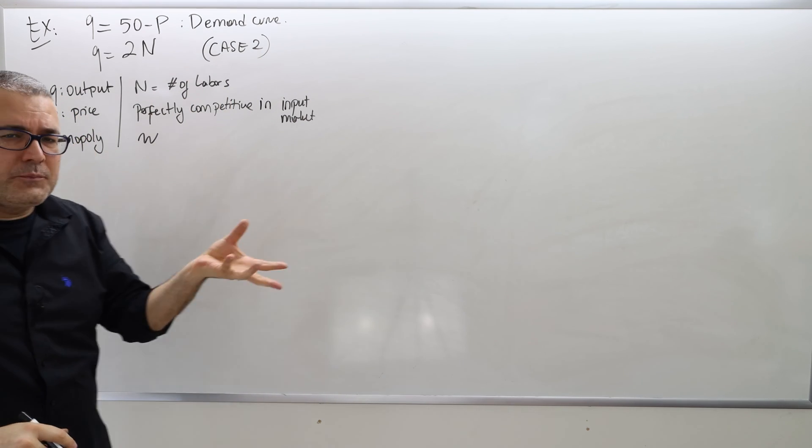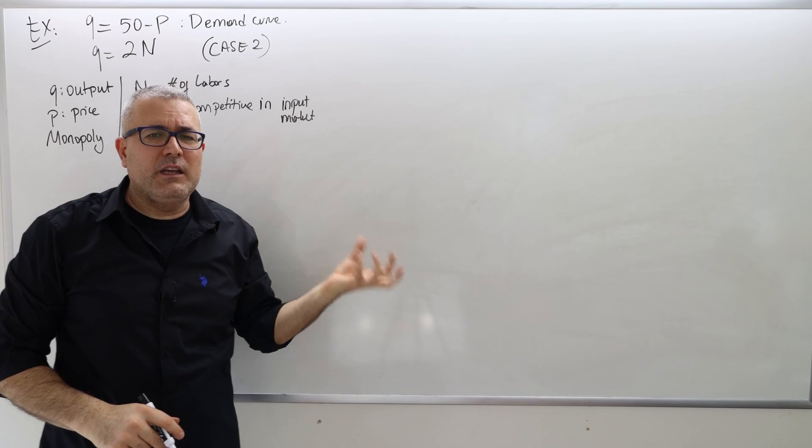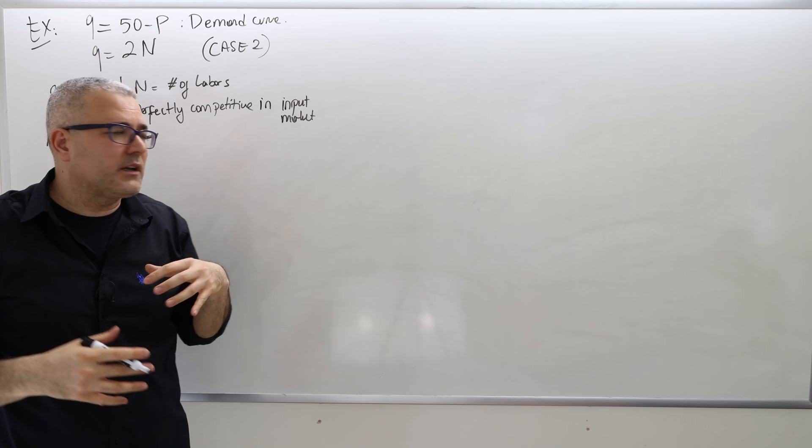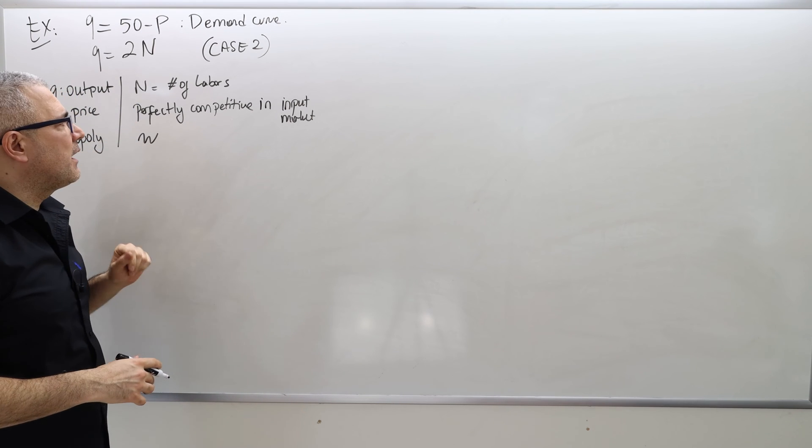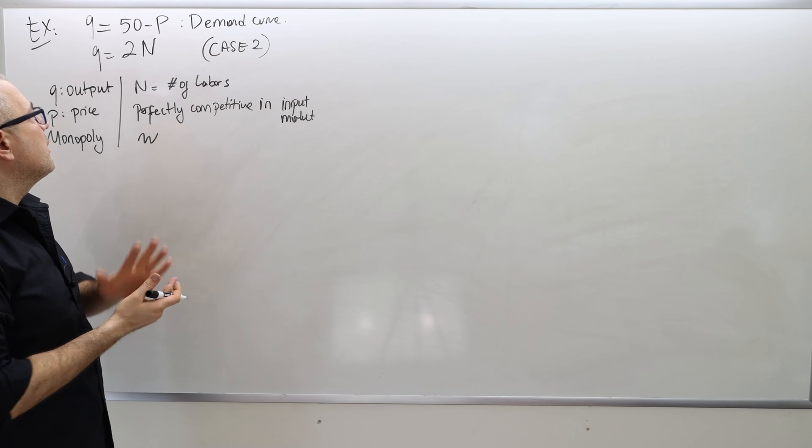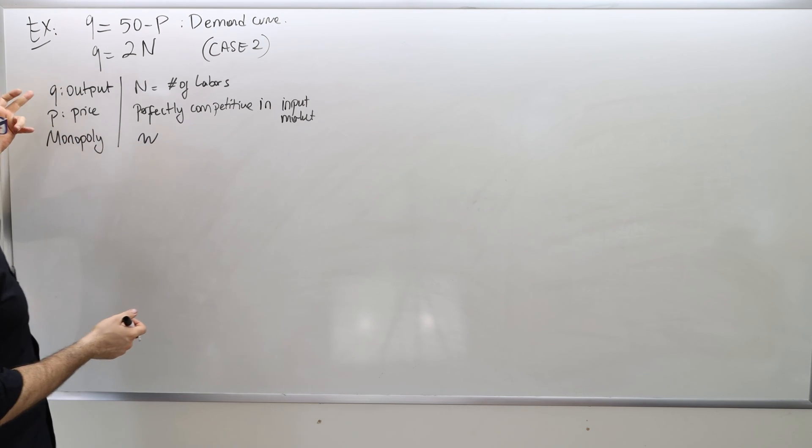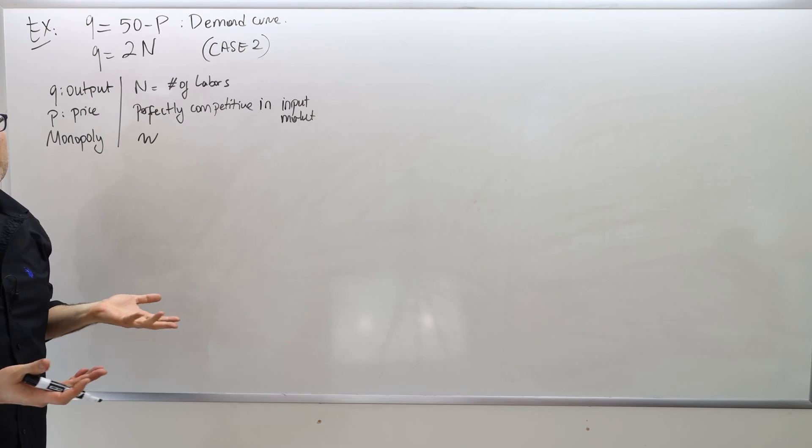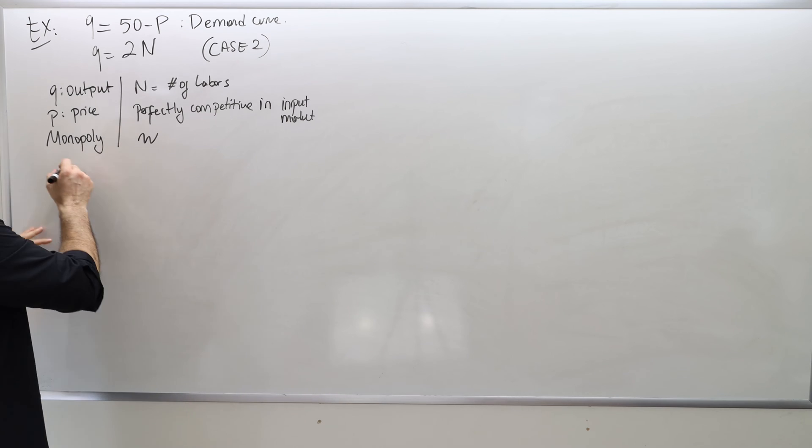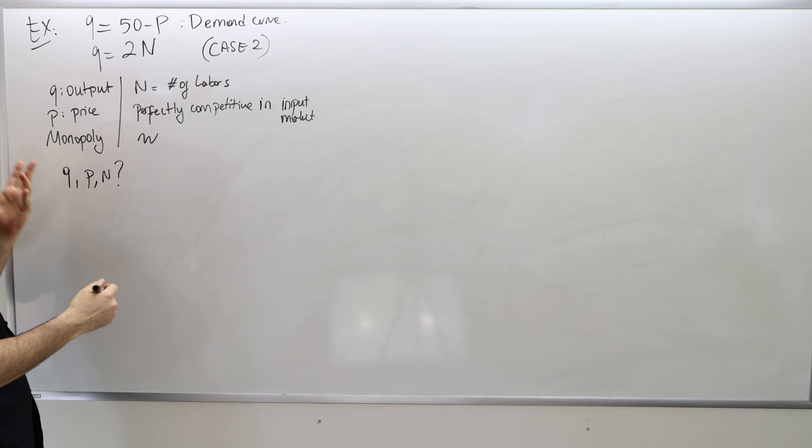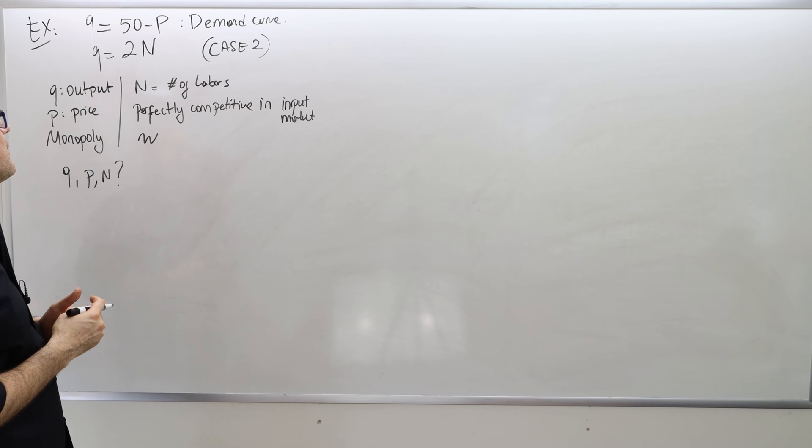Because it's a perfectly competitive market in the input market, it takes the wage as given, which is denoted by W. So the question was, given the W, what would be the optimal output and the price for the monopolist, and how many labors would the firm hire? So find the optimal quantity, optimal price, and optimal N, given W. That's a very straightforward and standard question.